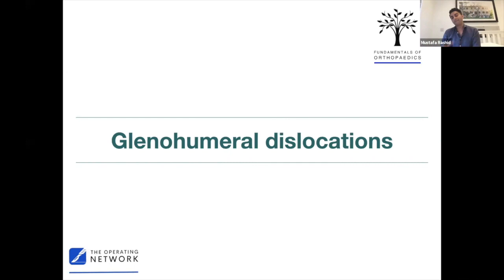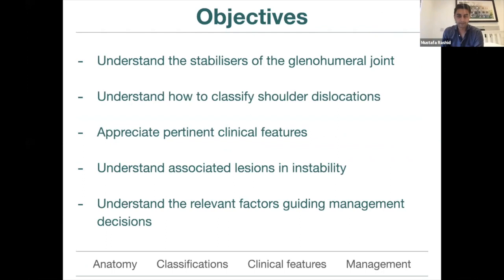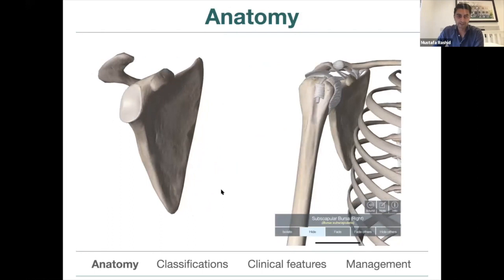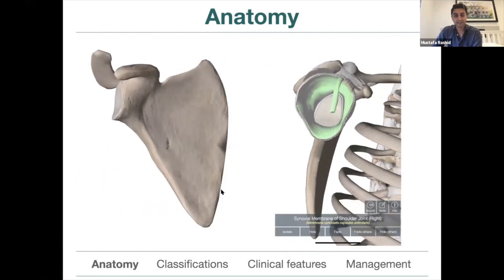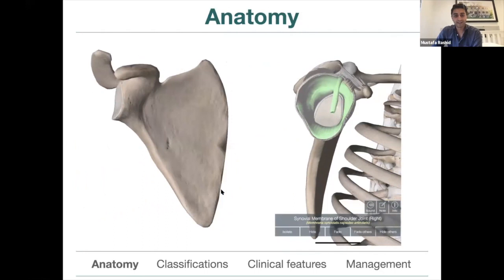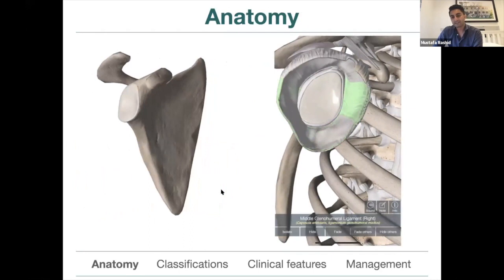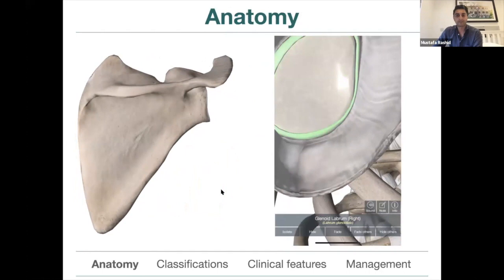Moving on to glenohumeral dislocations - focusing specifically on traumatic anterior acute shoulder dislocations. The objectives: what stabilizes the glenohumeral joint, how to classify dislocations, clinical features, associated lesions that lead to recurrent instability, and what factors guide management. The glenoid fossa is very small compared to the humeral head and is very flat - only three to four millimetres deep - so it confers a lot of instability but also allows a large range of motion.